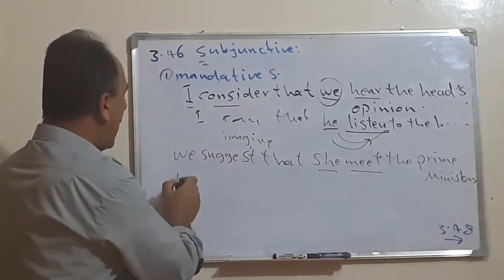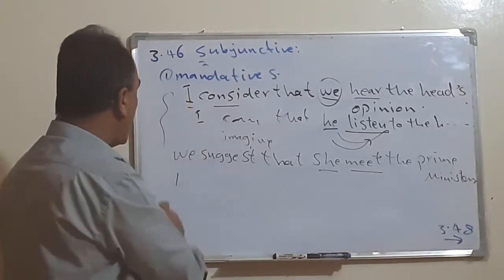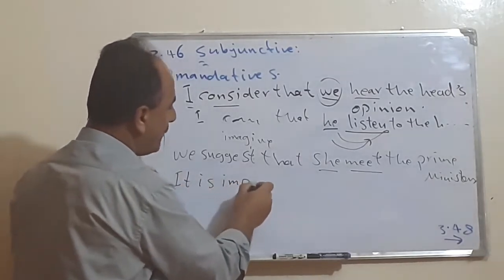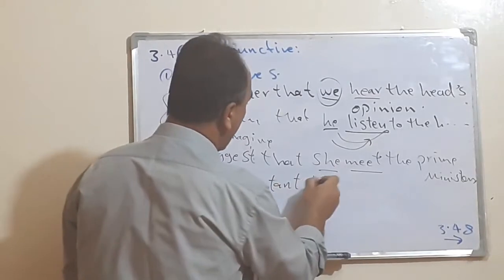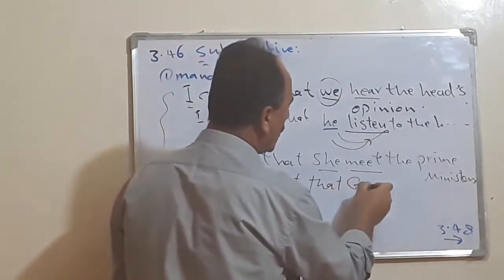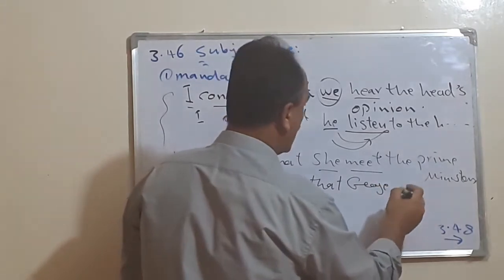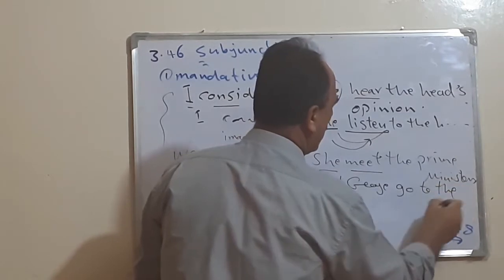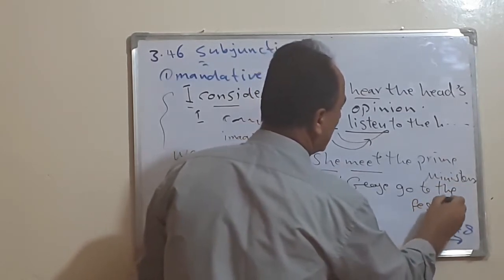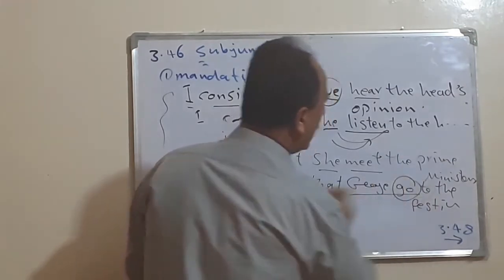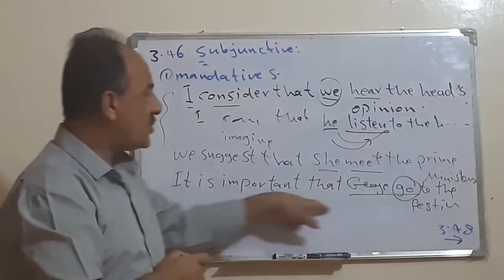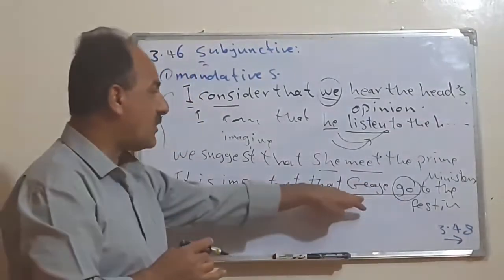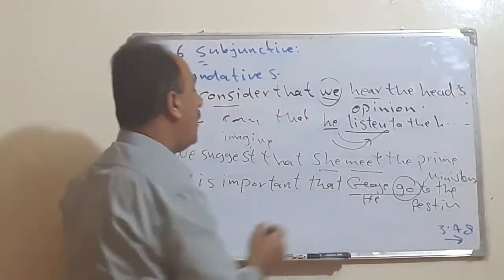The mandative has two forms. The first is the that-clause structure, and the second uses expressions like 'it is important' or 'it is necessary.' For example: 'It is important that George go to the festival.' Again, we say 'go', not 'goes', even though George means 'he' — because we are describing something imaginary.